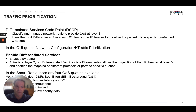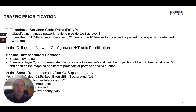Let's define differentiated services first. Differentiated services code point, or DSCP, is a means of classifying and managing your network traffic to provide quality of service at the layer 3 level. It uses a 6-bit field called the differentiated services field in the IP header to prioritize the packet into a predefined quality of service queue. This is done at layer 3.